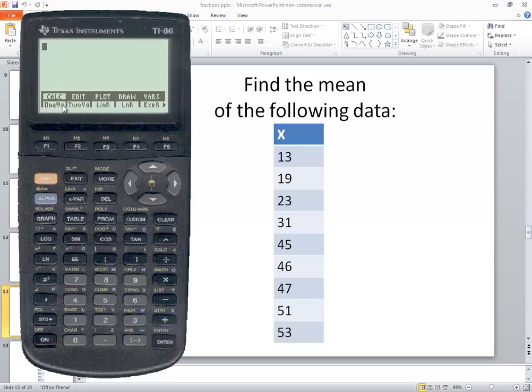I want 1VAR stats, so I'll go straight below that and press F1. Then I'm going to exit out twice.